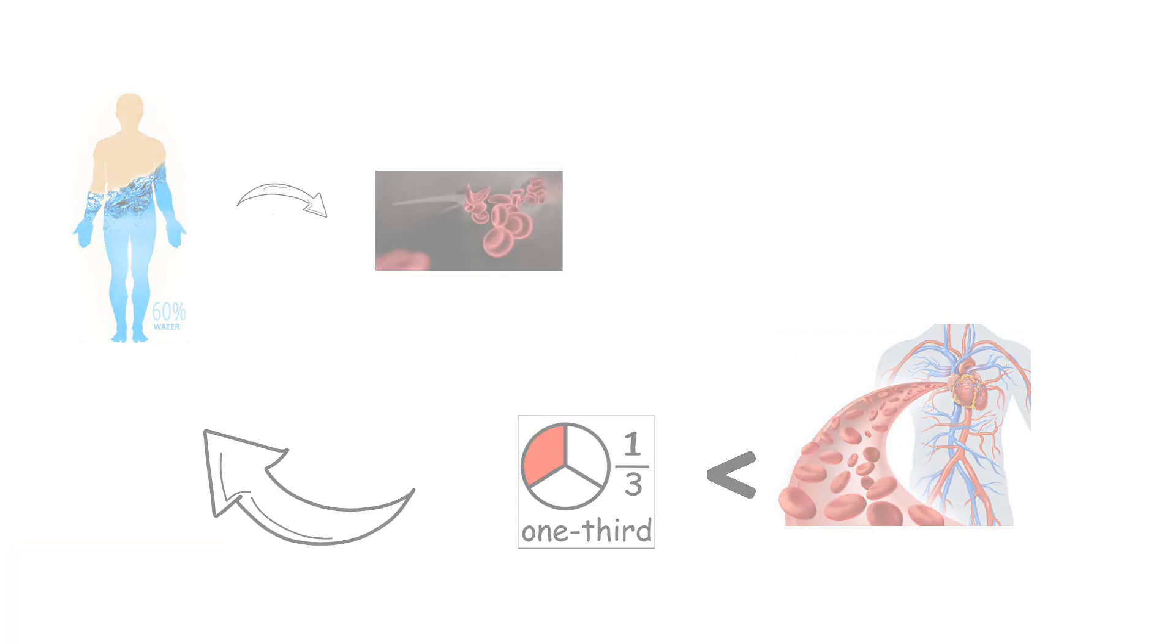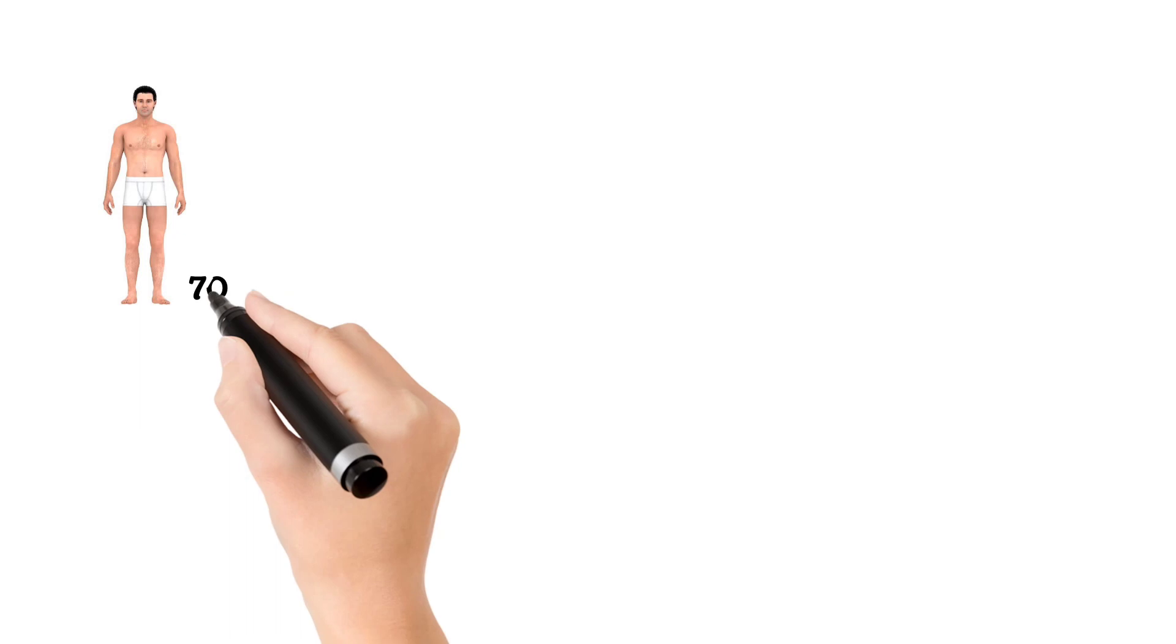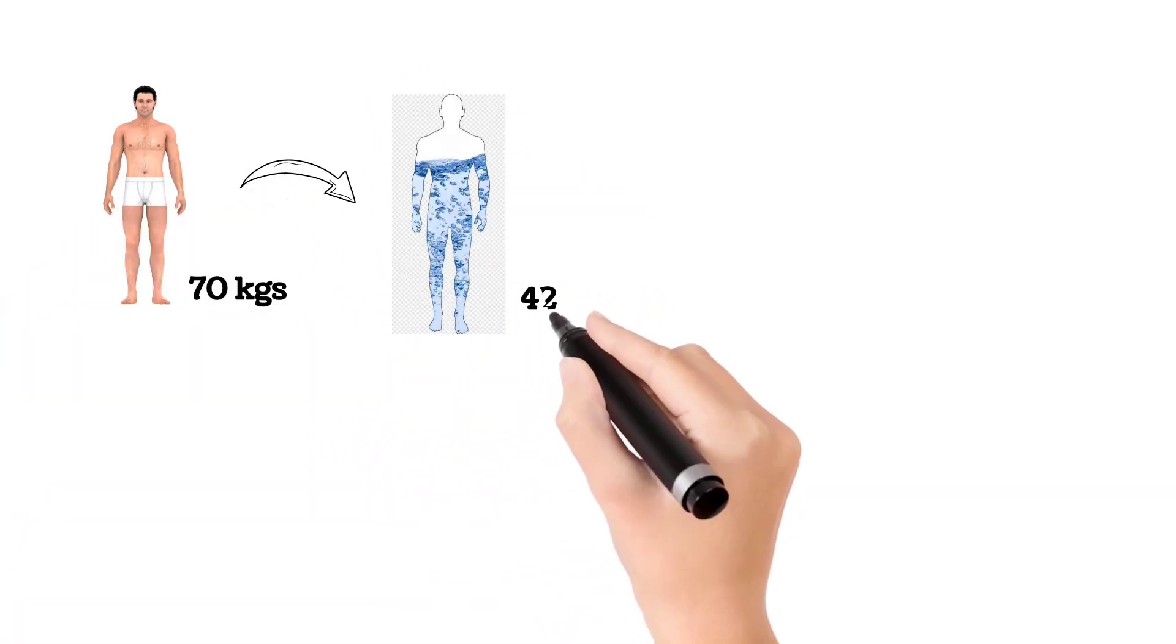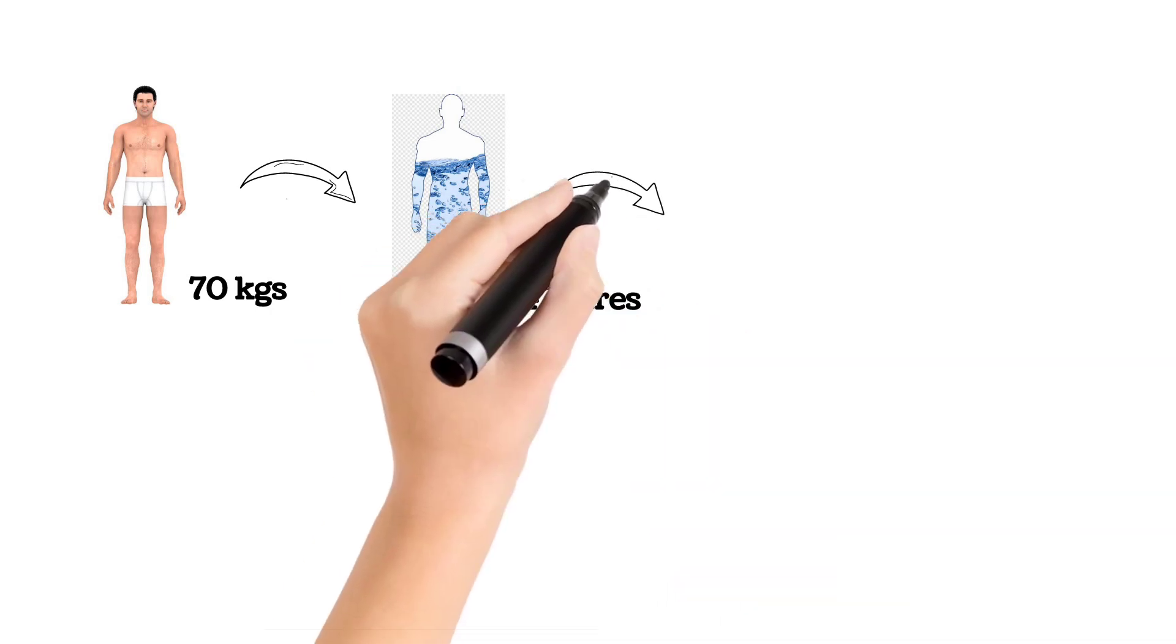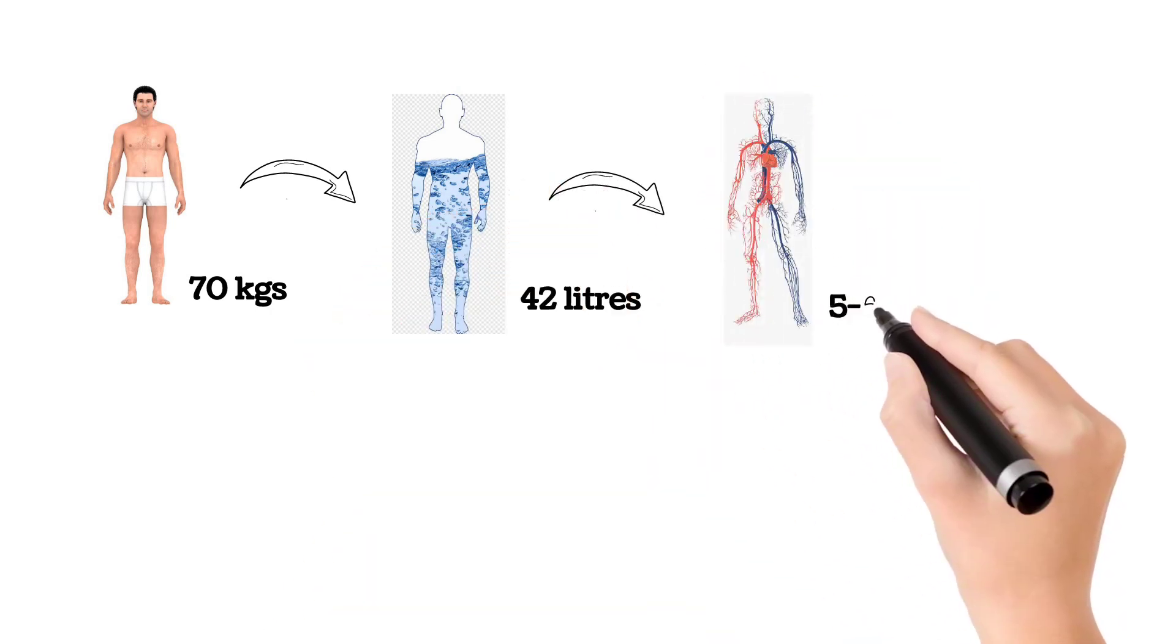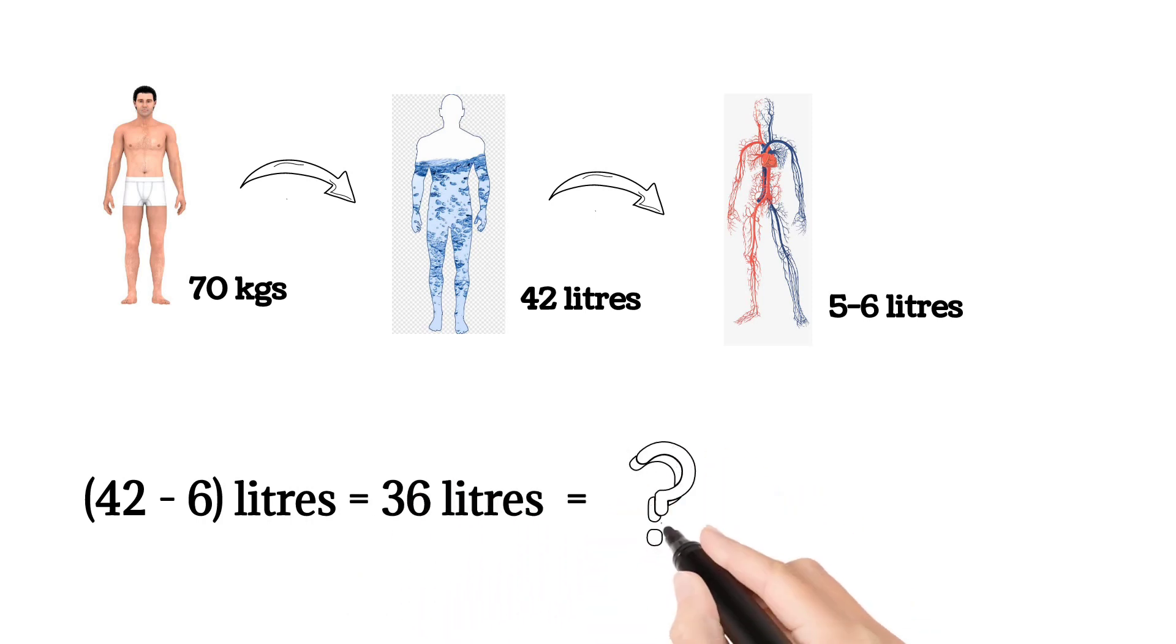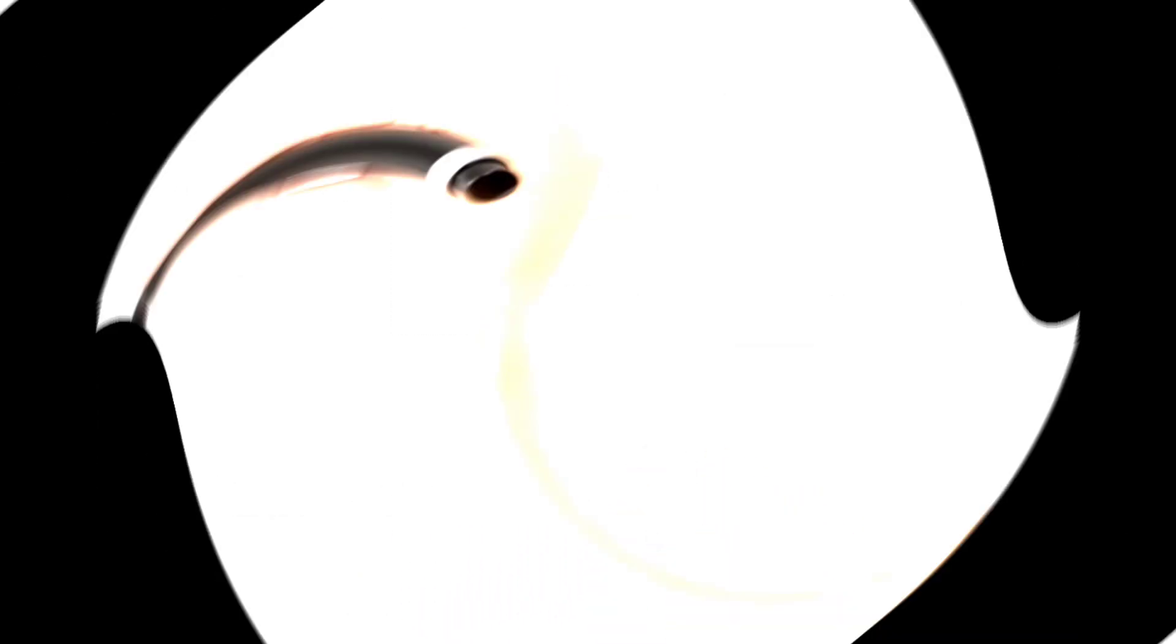If I take an average adult man of 70 kilograms, he probably has around 42 liters of water in his body, out of which only 5 to 6 liters forms the blood. Then where does 36 liters of water go? Let's delve into the answer.